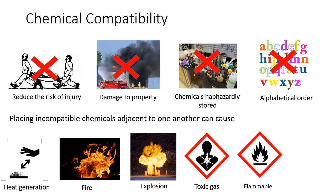Flammable gas or vapor production — for example, reactions between corrosives and metals. Formation of a substance with greater toxicity than the reactants — for example, mixing chlorine with ammonia. To avoid such mishaps, proper storage procedures must be followed.